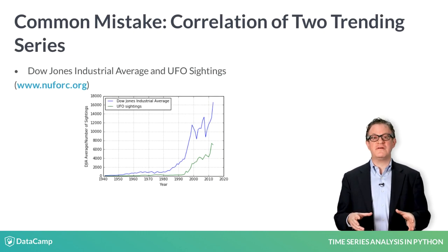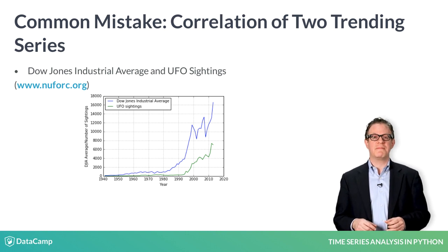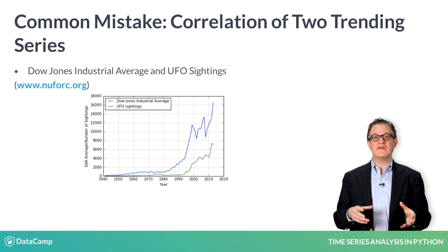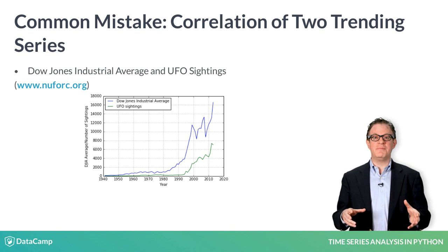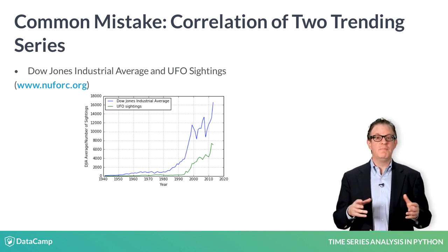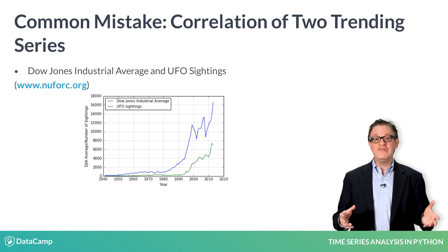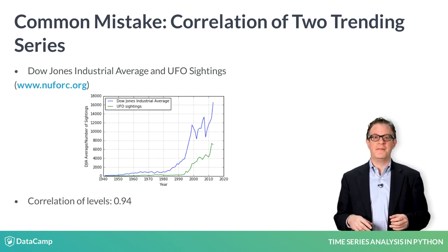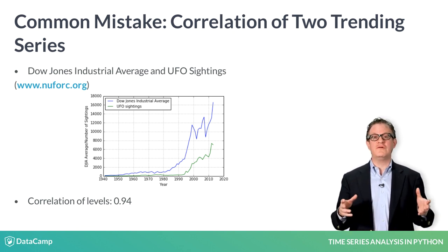Consider two time series that are both trending. Even if the two series are totally unrelated, you can still get a very high correlation. That's why when you look at the correlation of, say, two stocks, you should look at the correlation of their returns, not their levels. In this example, the two series — stock prices and UFO sightings — both trend up over time. Of course, there is no relationship between these two series, but the correlation is 0.94. If you compute the correlation of percent changes, the correlation goes down to approximately zero.